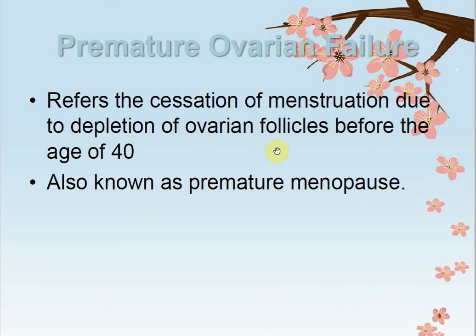Premature ovarian failure refers to the cessation of menstruation due to depletion of ovarian follicles before the age of 40. When ovaries reduce follicle production before age 40 — at 35, 36, or 37 years — complications arise. This is why late pregnancy conceived after 35 years carries higher risks due to hormonal changes in ovarian follicular cells. It is also known as premature menopause.